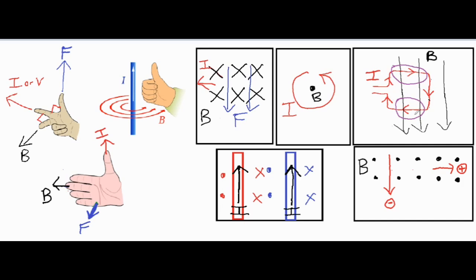For the bottom portion of the loop, we point our fingertips down the screen, turn our thumb to the left, and the palm comes outward. For the top portion, fingertips still pointing down, we turn the thumb to the right, and the force goes inward. This causes the loop to rotate — inward on this side and outward on the other side.